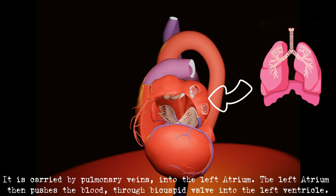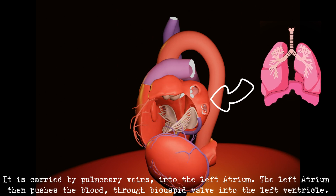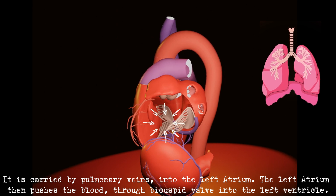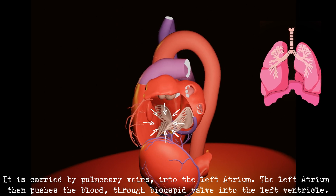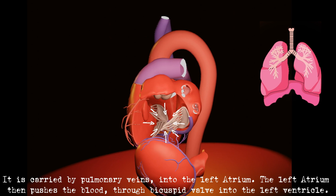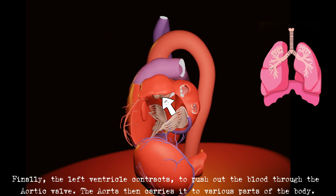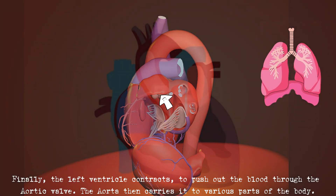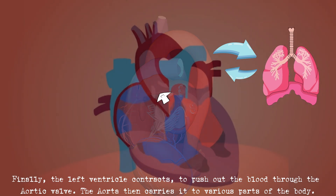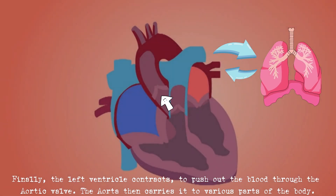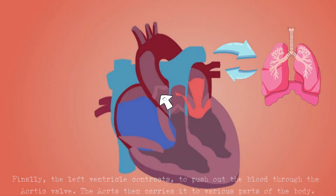Oxygenated blood is carried by pulmonary veins into the left atrium. The left atrium then pushes the blood through the bicuspid valve into the left ventricle. Finally, the left ventricle contracts to push out the blood through the aortic valve, and the aorta then carries it to various parts of the body.